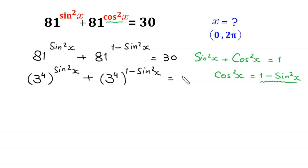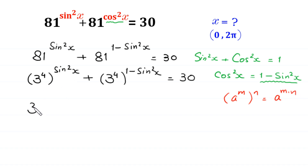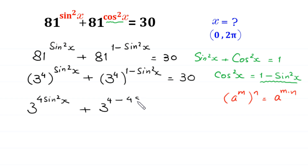By using the power rule — a to the power m, whole to the power n, equals a to the power m times n — this expression becomes 3 to the power 4·sin²x, plus 3 to the power (4 - 4·sin²x), is equal to 30.